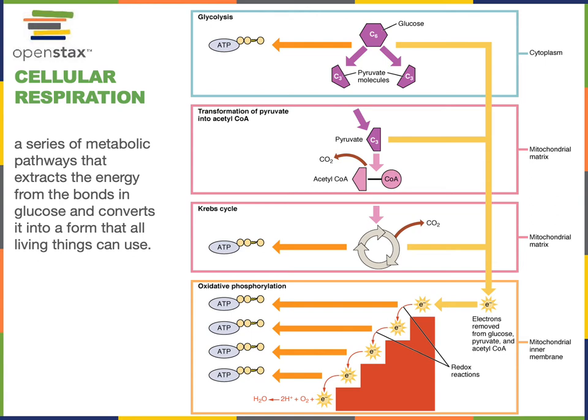Cellular respiration starts with the metabolic pathway known as glycolysis, which occurs in the cytoplasm. Glycolysis will convert one molecule of glucose that contains six carbon atoms into two molecules of pyruvate that each contain three carbon atoms.